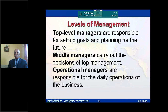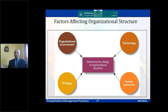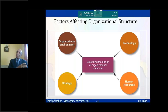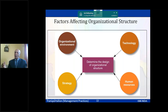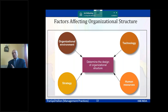Several factors influence organizational structure. The organizational environment matters — manufacturing companies often prefer a pyramid structure, while technology companies prefer flatter ones. Technology also plays a role: using robotics or IoT requires a different structure than a labor-intensive operation. Human resources matter too — when staff are highly trained specialists, a different structure is needed compared to a general workforce.